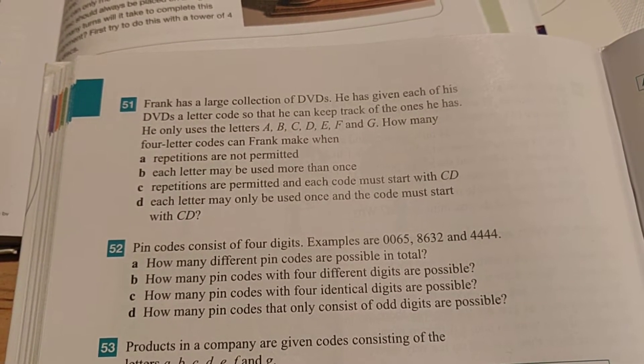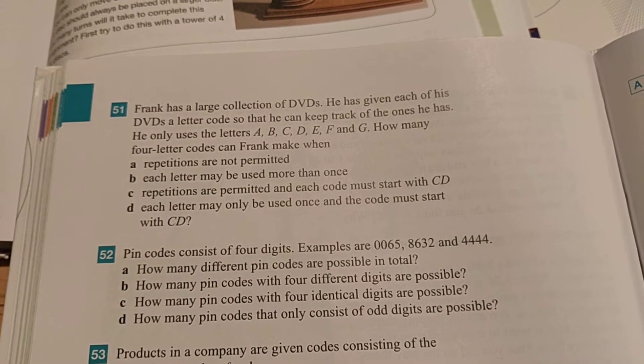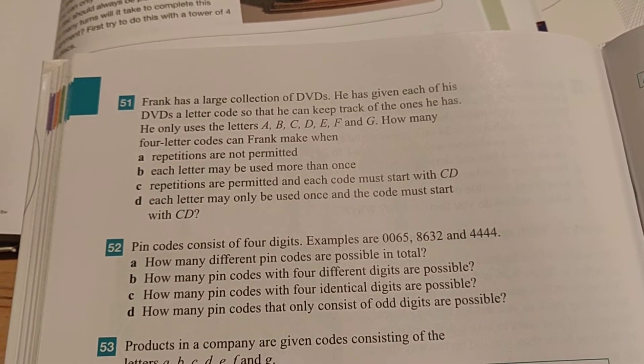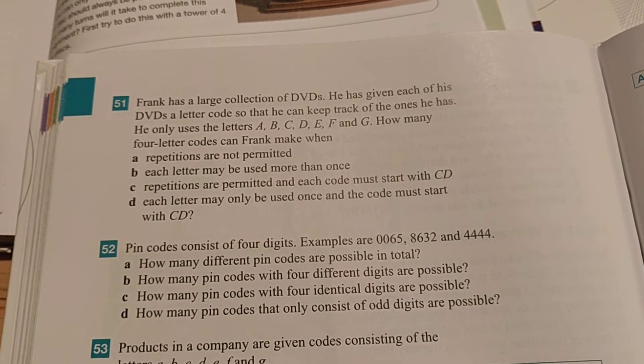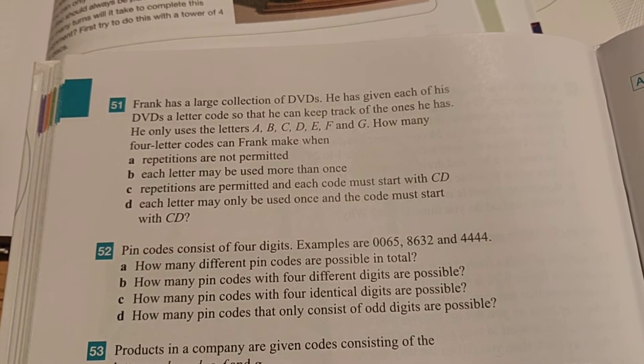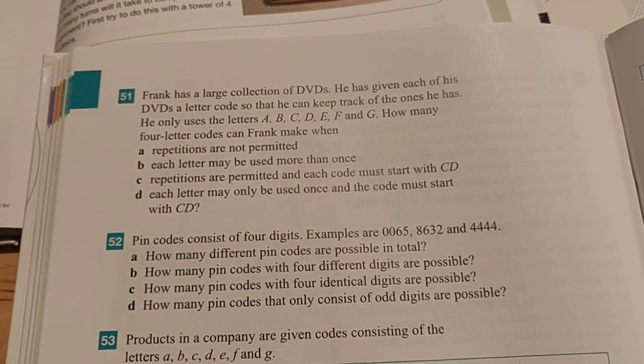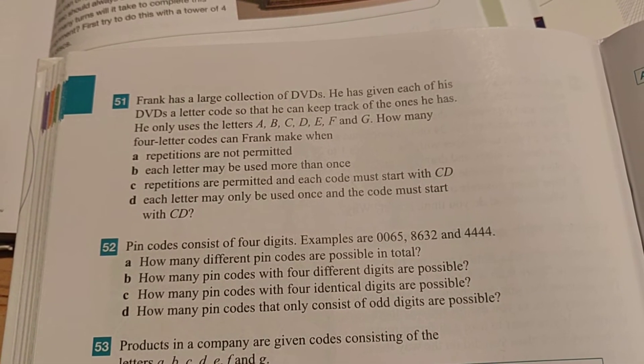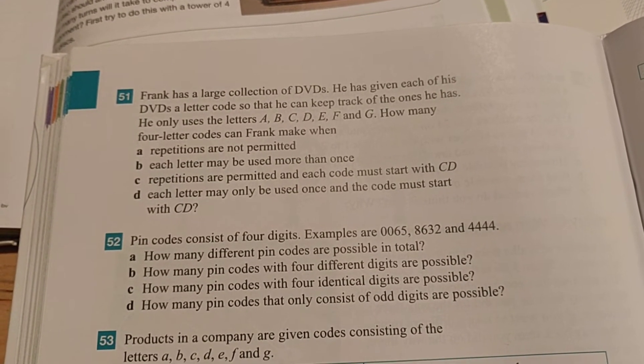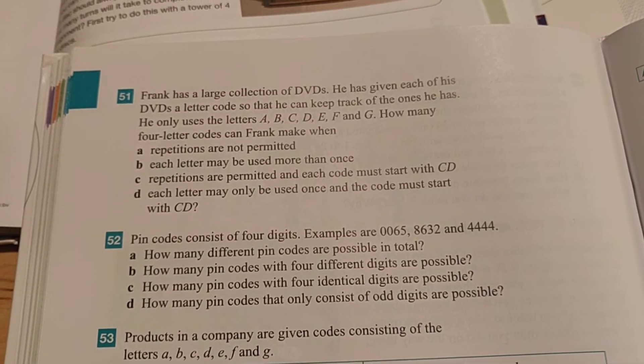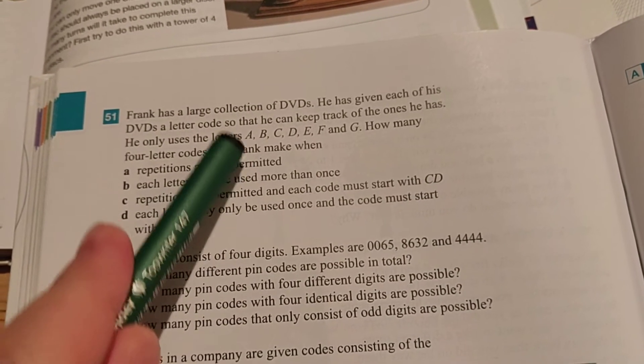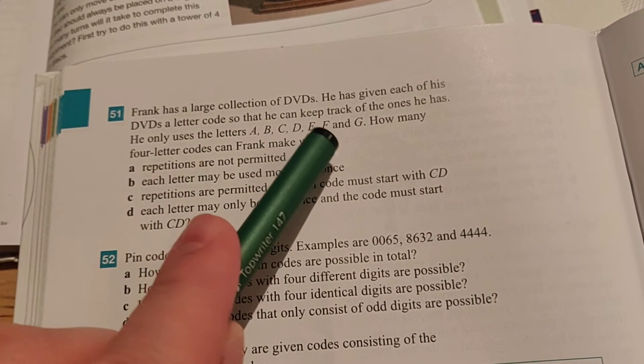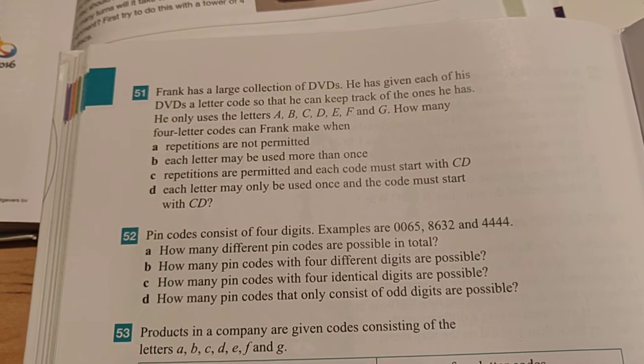How many four letter codes can Frank make when repetitions are not permitted? A repetition means that he repeats the same number twice, and here that's not allowed according to question A. So he can't use a code that has A, A, B, A for example, because then he uses three A's. The number of letters that he can use is 1, 2, 3, 4, 5, 6, 7. There are seven letters that he can choose from.